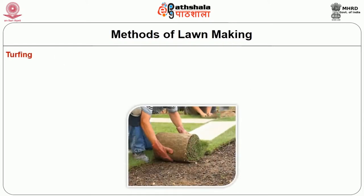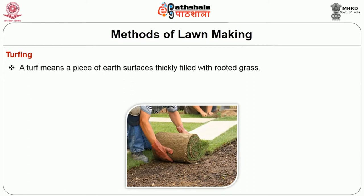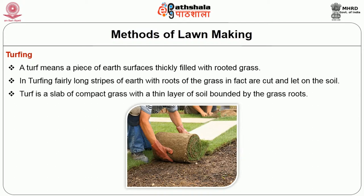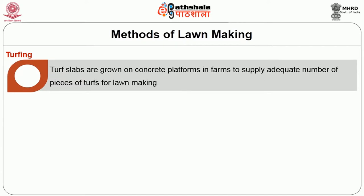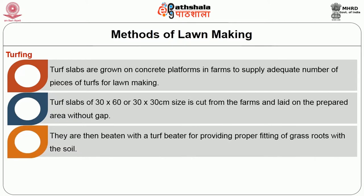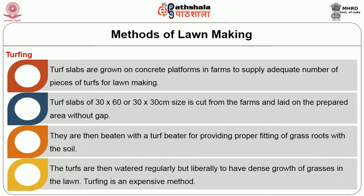The next important method is turfing. It is the most commonly used method. Turfing means a piece of earth surface thickly filled with rooted grasses. Fairly long strips of earth with roots of the grass intact are cut and laid under soil. Turf is a slab of compact grass with a thin layer of soil bounded by the grass roots. Turf slabs are grown on concrete platforms in farms to supply adequate numbers of pieces for lawn making. Turf slabs of 30 cm x 60 cm or 30 x 30 cm size are cut and laid on the prepared area without gap, then beaten with a turf beater for proper fitting of grass roots with the soil. Turfing is an expensive method of making lawn.